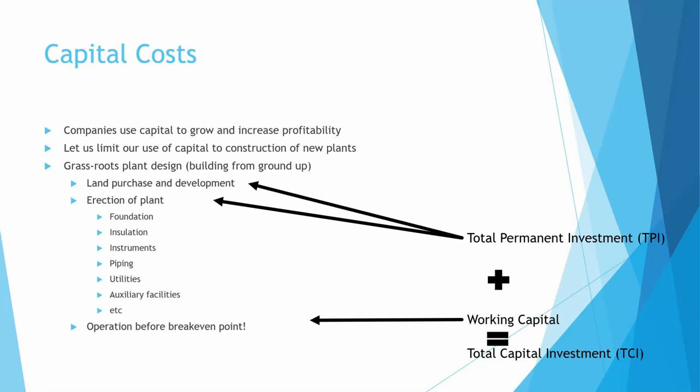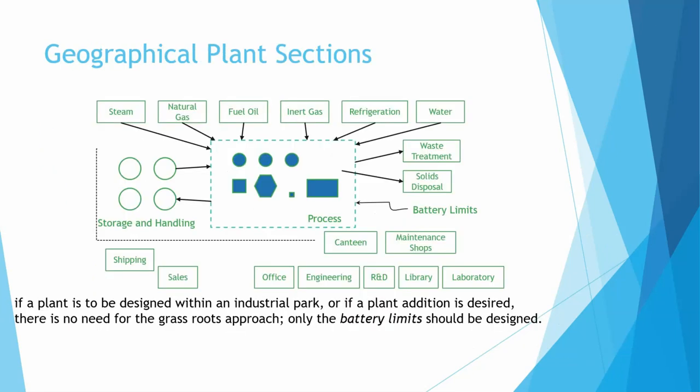When you add these two up, that's going to be the total capital investment. That total capital investment occurs until the point we have the break-even point. What is the break-even point? That is when you start making money overall, when selling your product offsets all of the other costs.